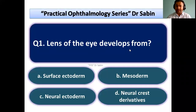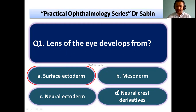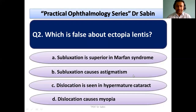The first question is: the lens of the eye develops from — this is a straightforward question. The lens and anything related to epithelium structures are developed from surface ectoderm. Anything related to blood vessels or muscles, corneal stroma, etc., they are developed from mesoderm.